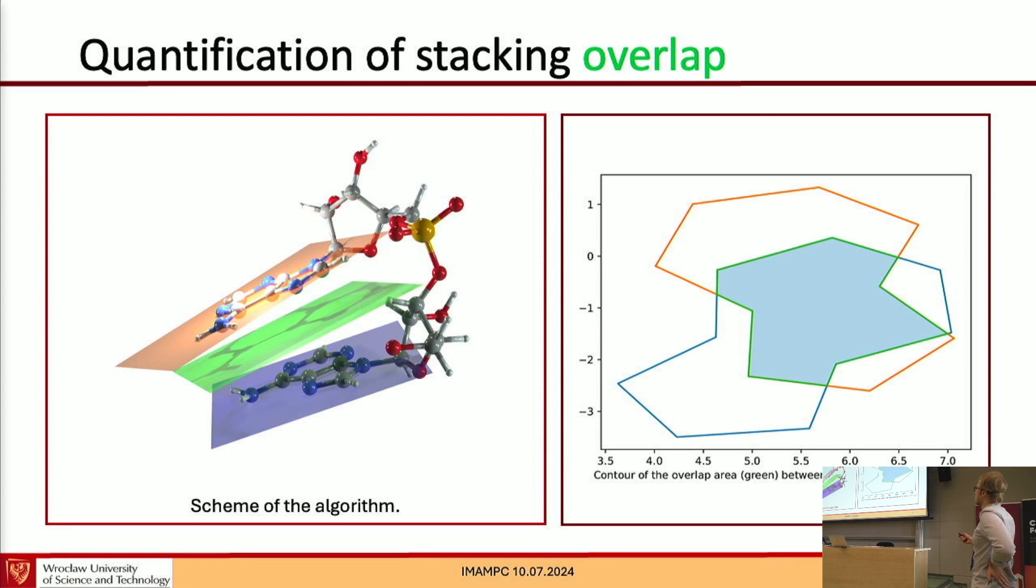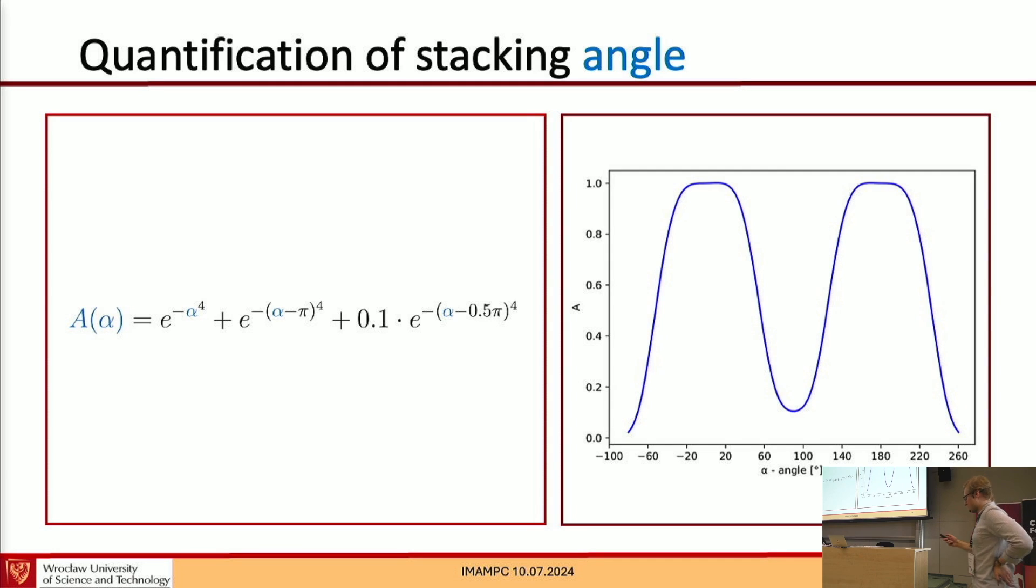And the fraction of the smaller base's area that is overlapped by the larger base is being used as one of the parameters for my stacking score algorithm. I also use two other parameters. One is angle between the planes and it is described with an equation that is presented here. And this equation makes it that for systems that are close to being parallel with each other, the stacking score is close to one. This parameter score is close to one.